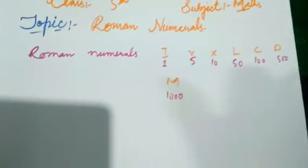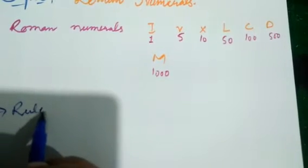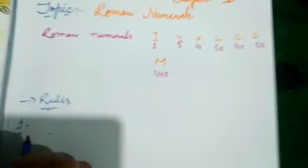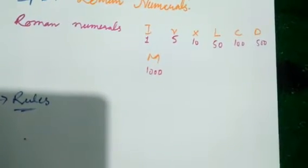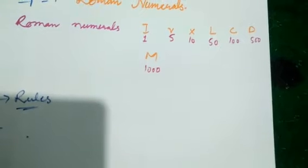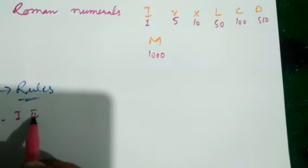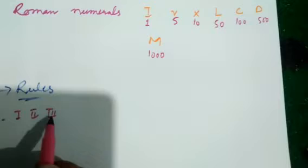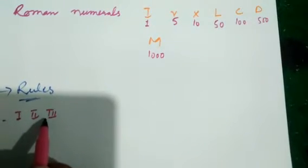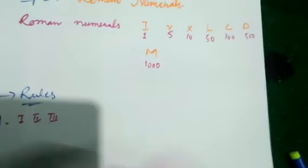Now I will show you some rules of Roman numerals, after which we will go to the exercise. The first rule is: if any Roman numeral is repeated, that repetition means addition. For example, if you write I, I, I — it is one, two, three — they are repeated so we add them: one plus one is two, two plus one is three.